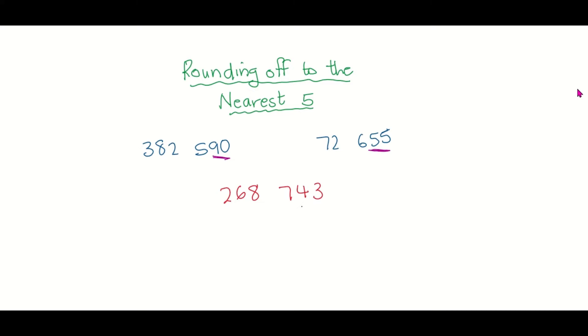But if you were given a number like this and you were asked to round that off to the nearest five, then this is the method you should follow. Look at the last two digits and write that number down again: 43.